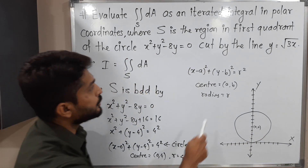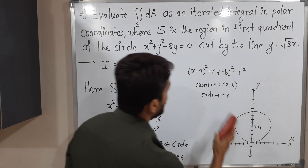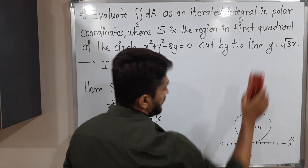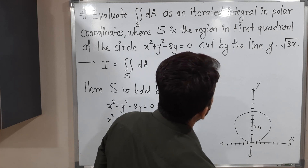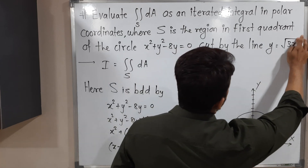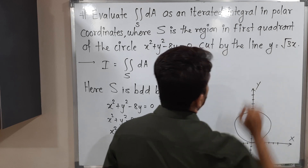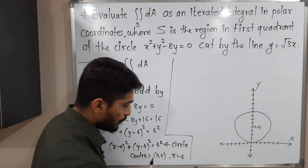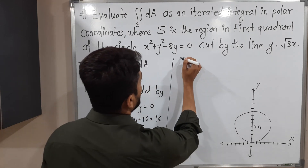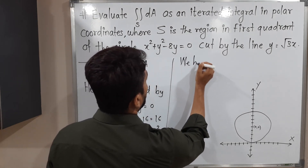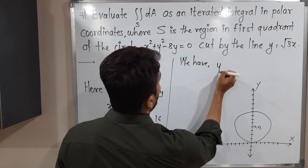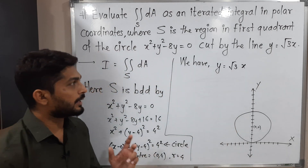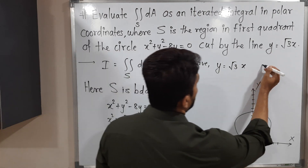After that, they have mentioned one more equation — the equation of a line. The equation of line is y = √3x. Since the power of x is 1 and power of y is 1, it's a line.